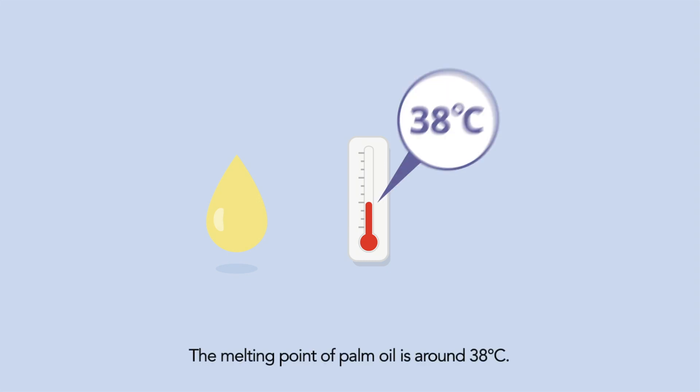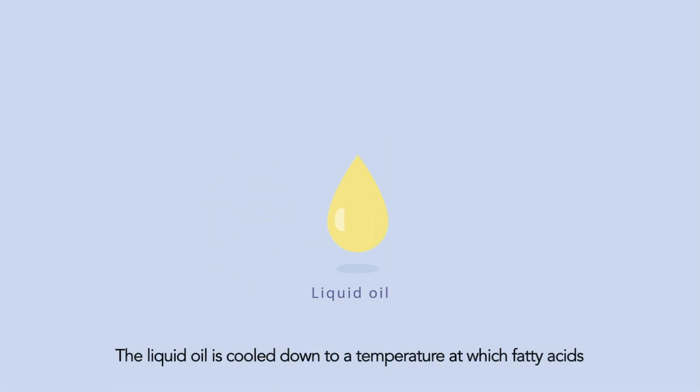The melting point of palm oil is around 38 degrees Celsius. The liquid oil is cooled down to a temperature at which fatty acids with a higher melting point start to form crystals.